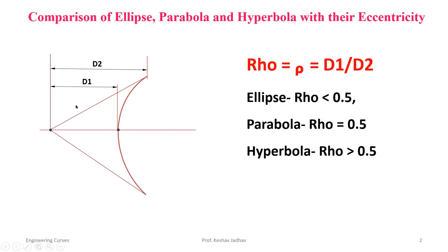Here we can see one of the conic curves with a horizontal axis, a starting point, and an ending point. If you draw tangents from both ends, they intersect at a point. Rho is the ratio of distance d1 divided by distance d2. If rho is less than 0.5 it is an ellipse, if rho equals 0.5 it is a parabola, and if rho is greater than 0.5 it is a hyperbola.